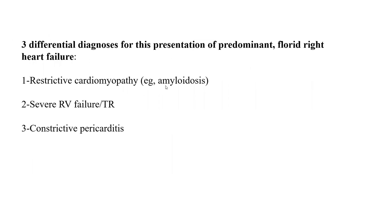Number one: restrictive cardiomyopathy, such as amyloidosis — whether senile, genetic, or AL amyloidosis. Number two, and most commonly actually, severe RV failure plus or minus severe tricuspid regurgitation for any cause. And number three, constrictive pericarditis. But the most common is actually severe RV failure. People always think restrictive cardiomyopathy or constrictive pericarditis, but severe RV failure is probably the more common one.